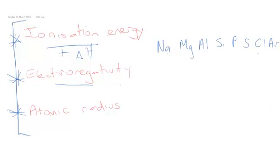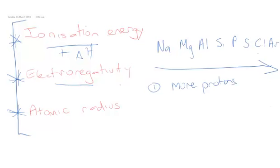As we're going across a period — I'm just choosing here from sodium going through into argon — what's actually happening is we get more protons. Protons have a positive charge, and this is sometimes called the nuclear charge. And as we're going across, we're also getting more electrons, but we're actually in the same energy level. That's kind of important.